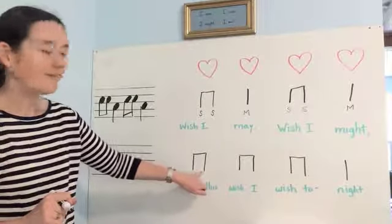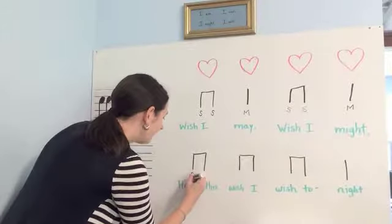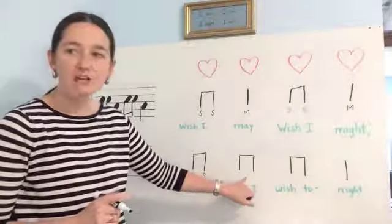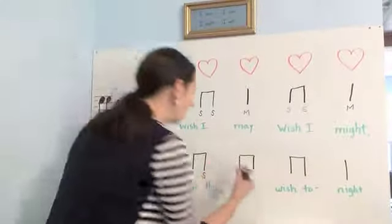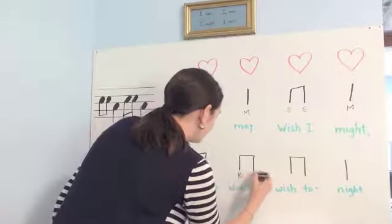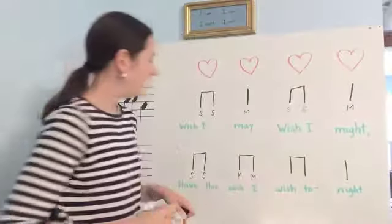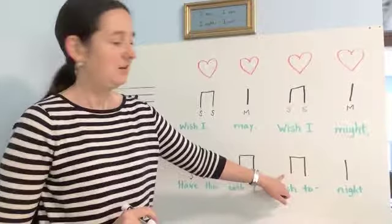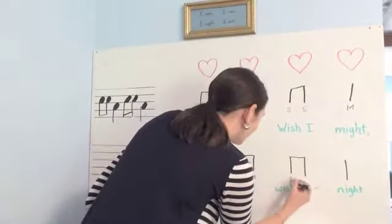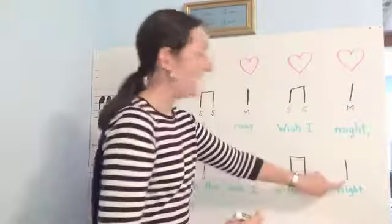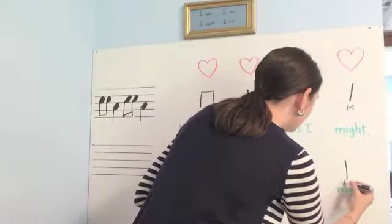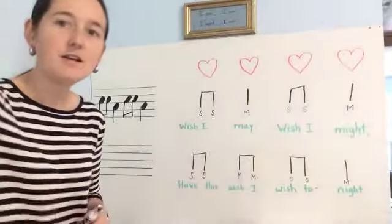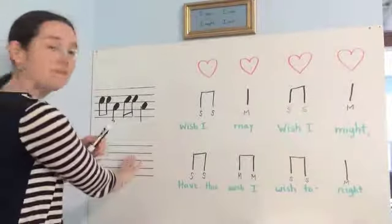What about "have this"? It's a so. So we're going to put a little S for so. "Have this wish I" — what's that? That's a me. Both of them are me, so I'm going to put a little M. "Wish to" — is that a so or a me? So. Good. And then the last one is a me. So now we have that notated here and we're going to put it on our staff.